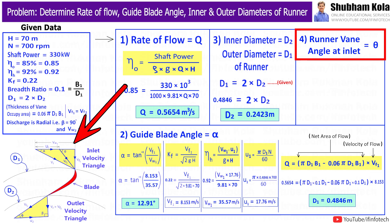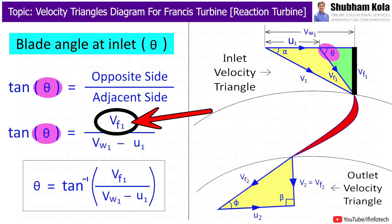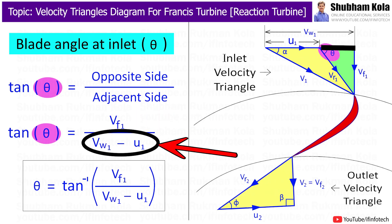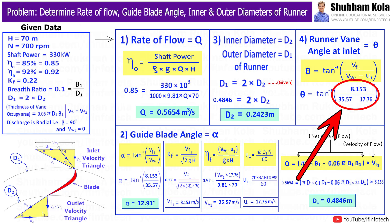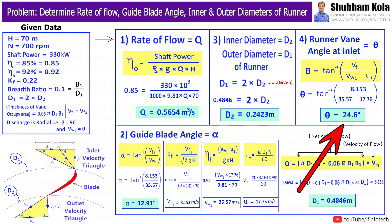Now we calculate the runner-vane angle at inlet, theta. From the inlet velocity triangle, tan θ = Vf1 / (Vw1 − u1), where Vf1 is the opposite side and (Vw1 − u1) is the adjacent side. We have already found all these values, so by taking tan inverse, we get runner-vane angle at inlet theta = 24.6°.